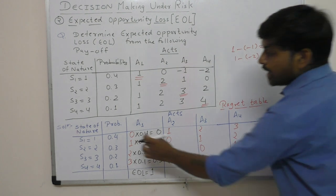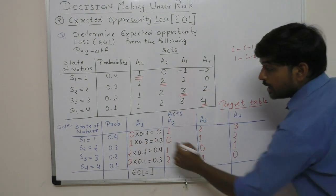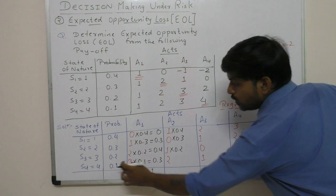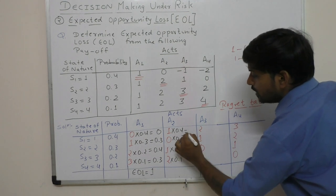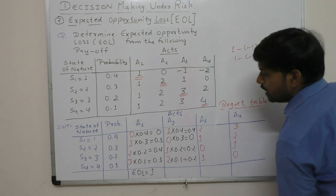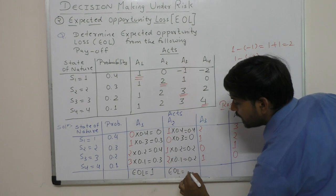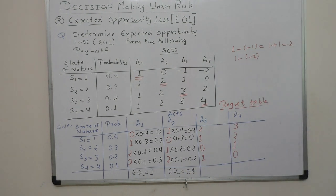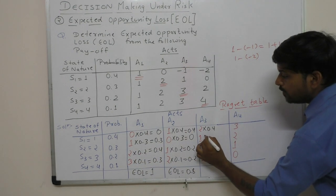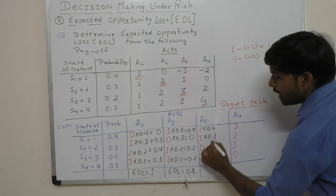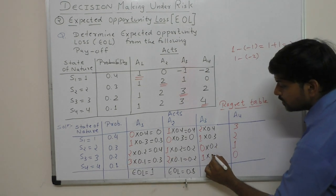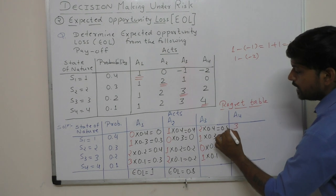Now we will multiply the regret values by their probabilities. For act A2, the calculation is: 1 into 0.4, plus 0 into 0.3, plus 1 into 0.2, plus 2 into 0.1. This gives 0.4 plus 0 plus 0.2 plus 0.2, so the EOL for A2 is 0.8.